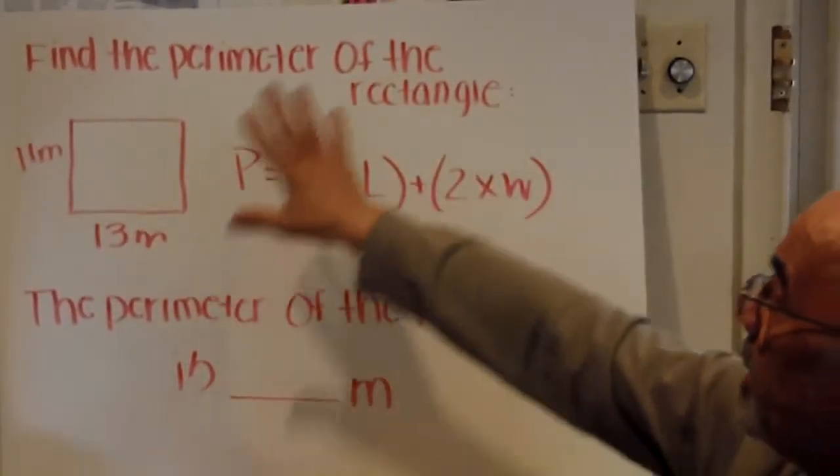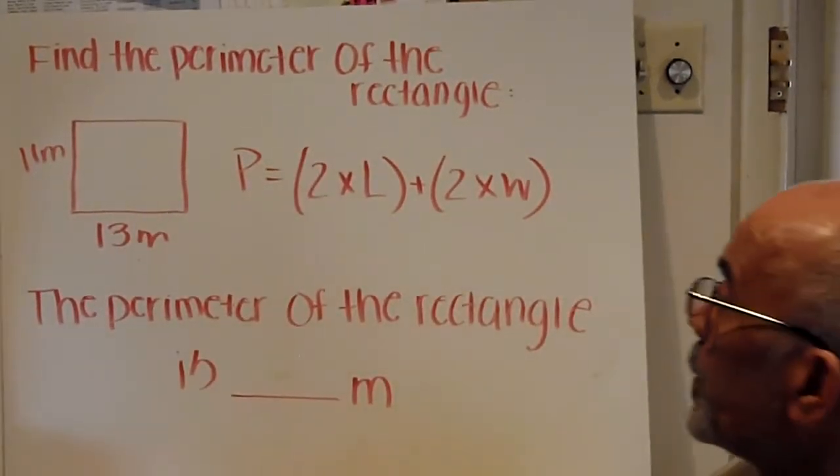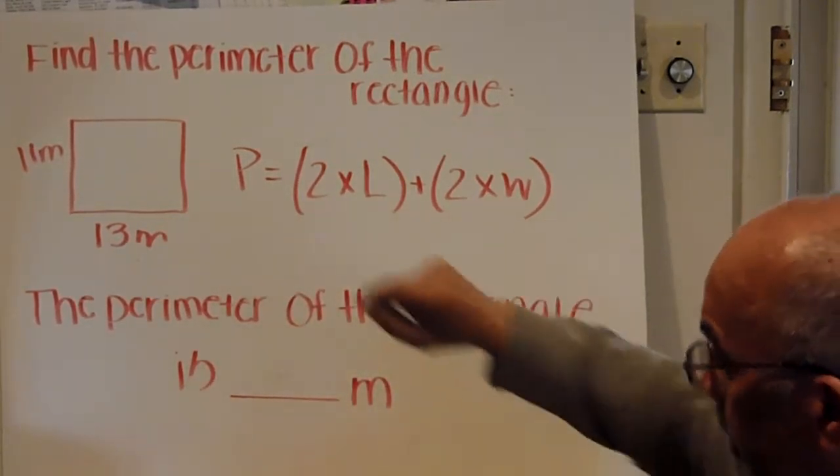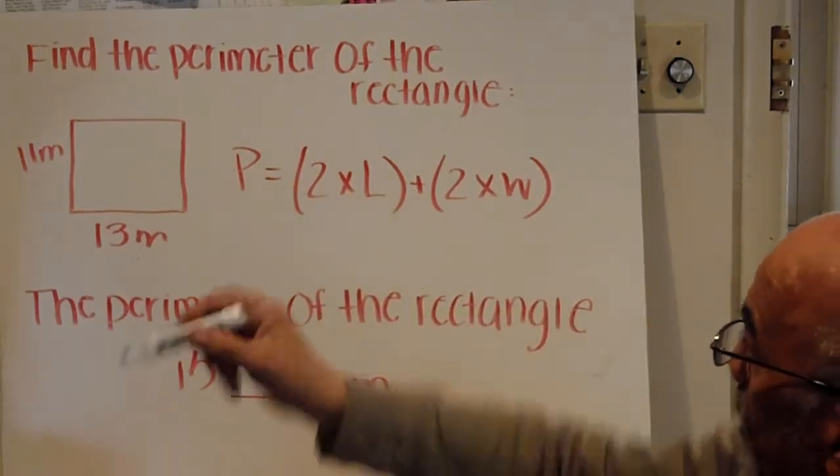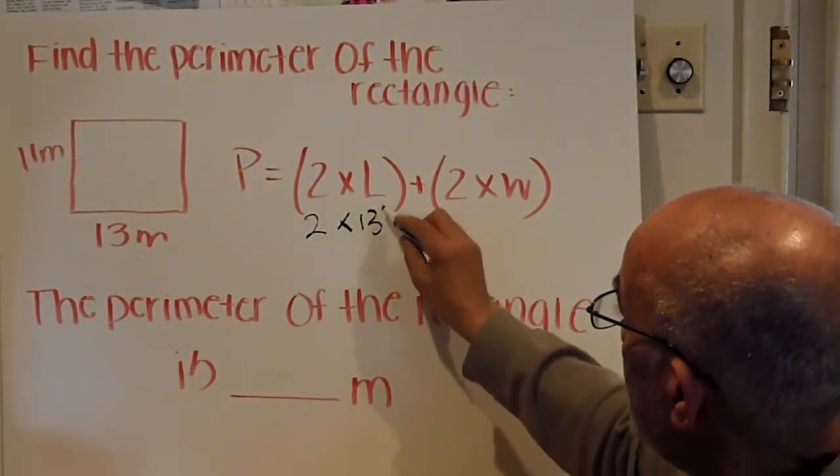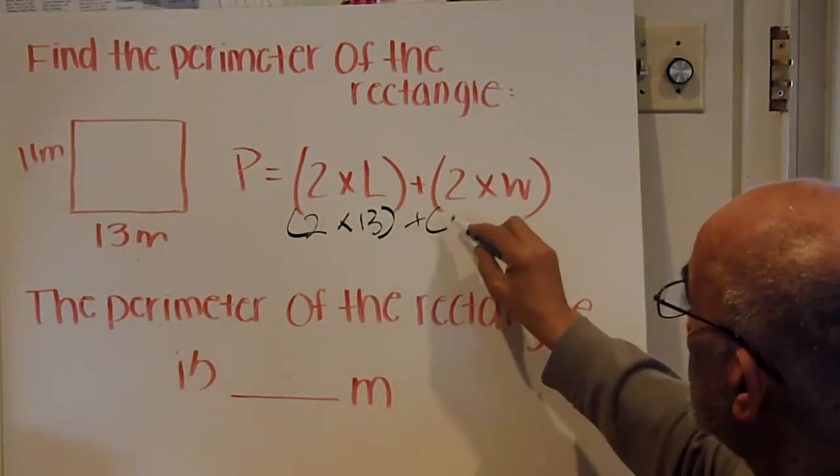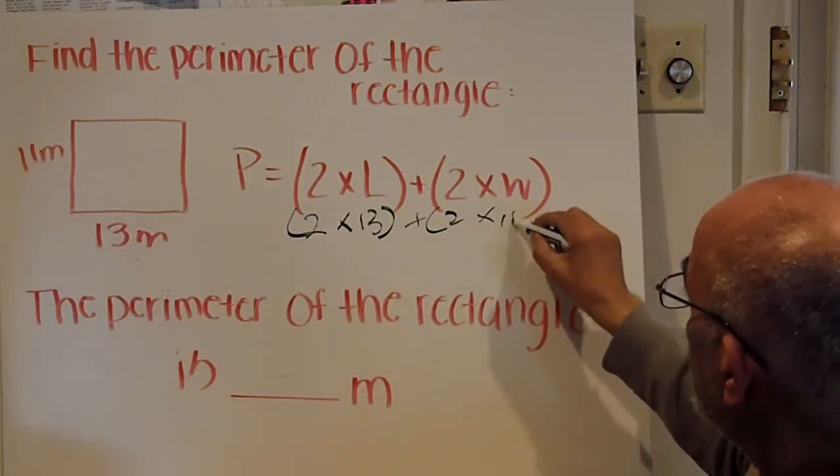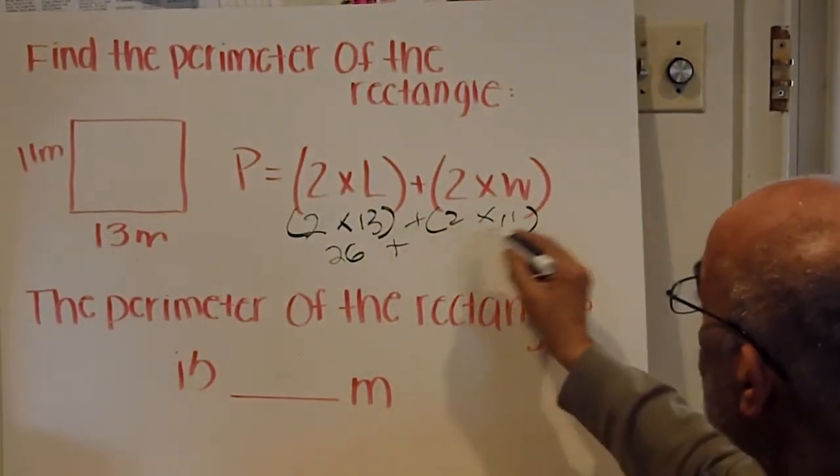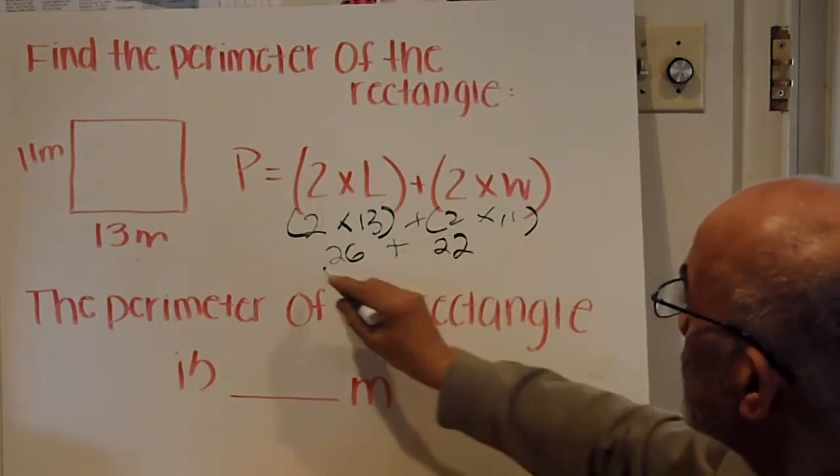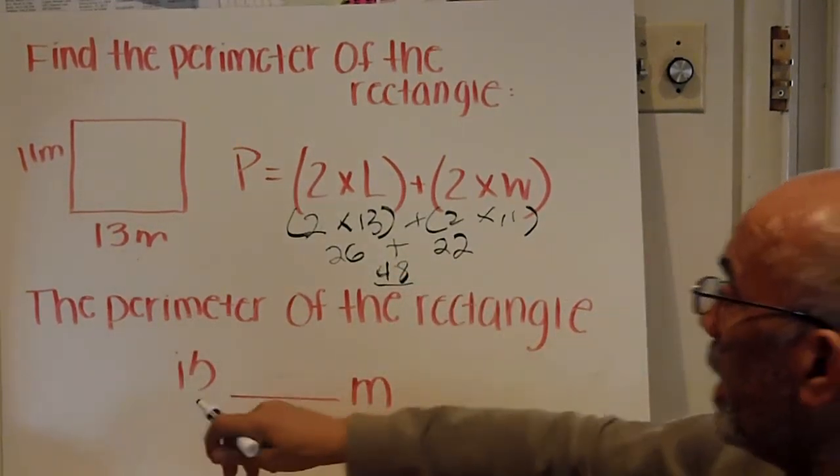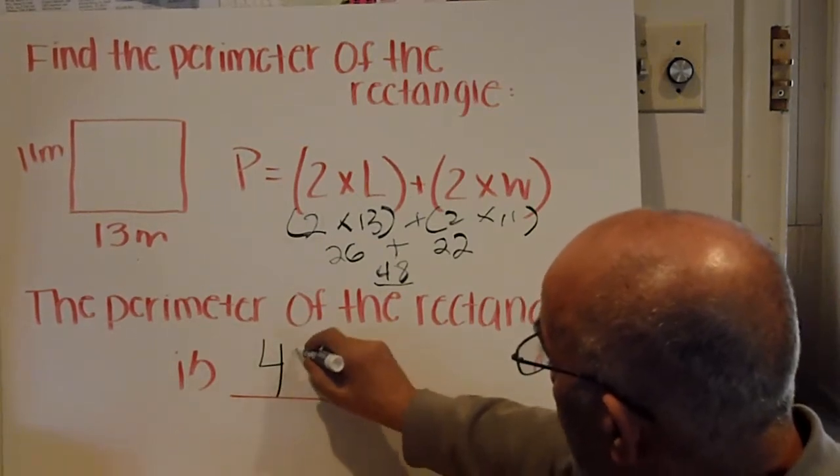We can also, in this case, let's use the formula and find the perimeter of this rectangle. Remember the formula? Perimeter equals two times length plus two times width. In this case, we have a length of thirteen. So, two times thirteen plus two times eleven. Two times thirteen is twenty-six, plus two times eleven is twenty-two. Twenty-two plus twenty-six is forty-eight. The perimeter of the rectangle is forty-eight meters.